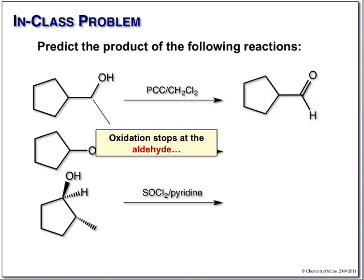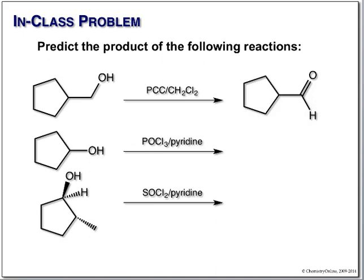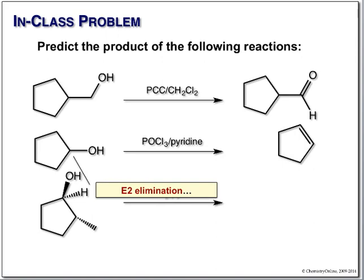Next: POCl3 and pyridine again. This forms a phosphate ester; in the presence of pyridine we get a clean E2 elimination and introduce a double bond. If we had a choice we'd form the Zaitsev product, but this is a cyclopentanol, so it doesn't matter — we just get cyclopentene.